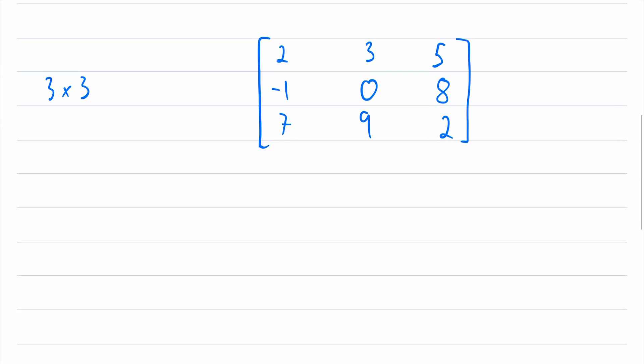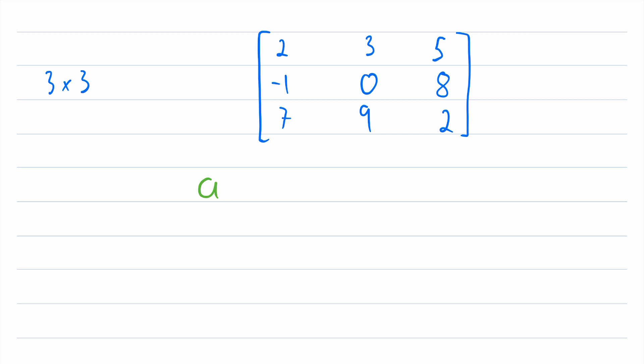So we could represent a generic entry in a matrix like this, A subscript IJ, where I refers to the row number that the entry is located in, and J refers to the column number.